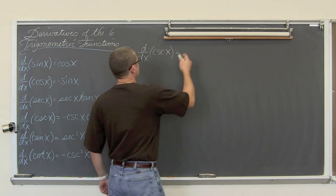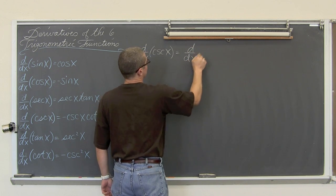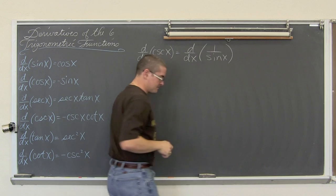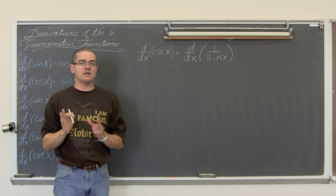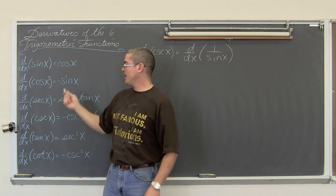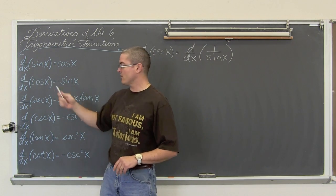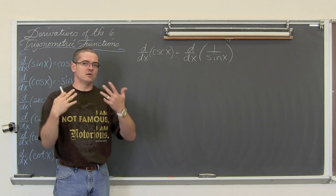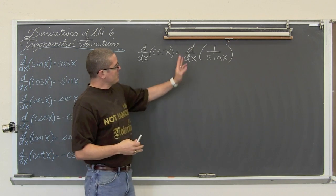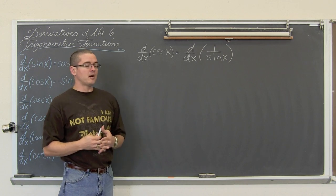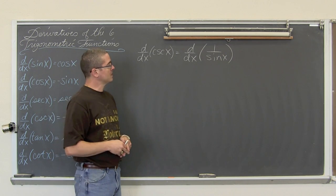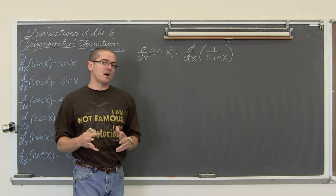That is going to be the derivative with respect to x of one over the sine of x. Now we know that the derivative of sine is cosine. And if I want to find the derivative of this, well I have one divided by the sine of x, so that means that we need the quotient rule.